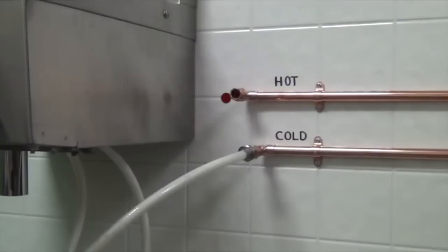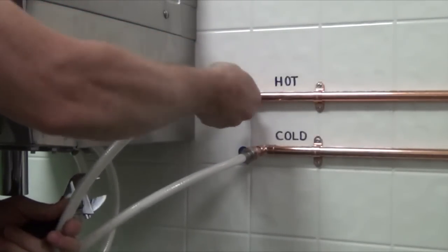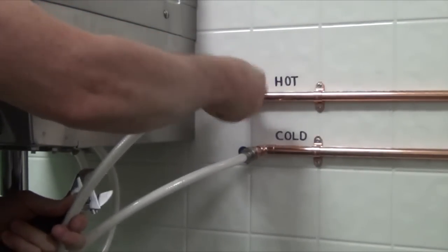The last hose remaining is the hot water supply which is located on the right side of the valve when facing the unit. Attach the flexible hose to your incoming hot water supply and tighten with a wrench.